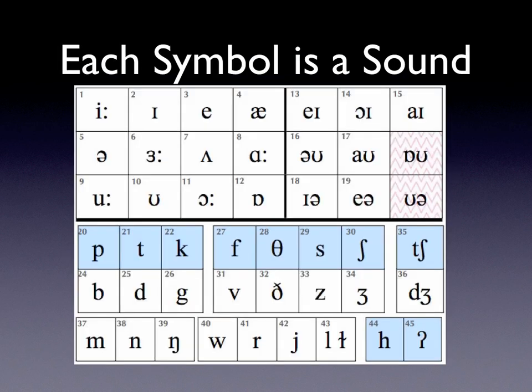Each symbol on the chart represents a sound. This is basically a phonetic chart using the IPA for British English. You don't necessarily have to know all of these sounds, but it's a good idea to have some idea. As you can see, there are 45 of them — it's kind of a long list.